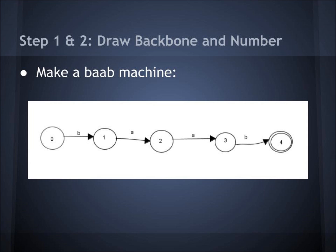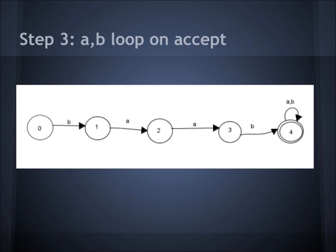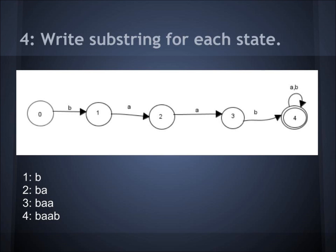Here is an example. First you draw the backbone of the machine — this is a BAAB machine. Then you put an AB loop on the accept state. Then you write the substring for each state: state 1 would have B, state 2 would have BA, state 3 would have BAA, and state 4 would have BAAB.